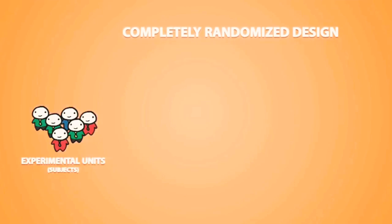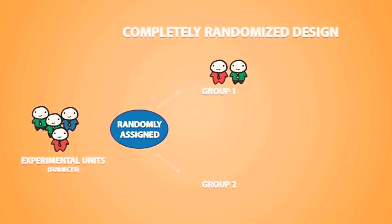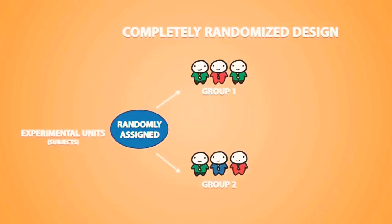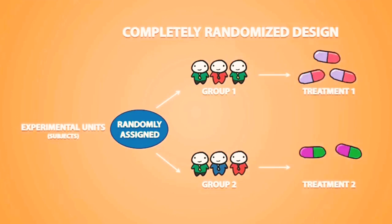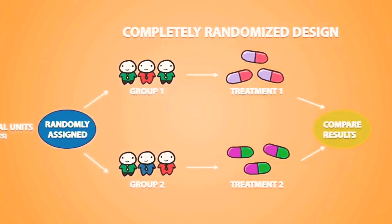In a completely randomized design, each experimental unit is randomly assigned to a random group to receive a different treatment. Each unit in the same group will receive the same treatment, and at the end of the experiment, you will compare the results from each treatment.